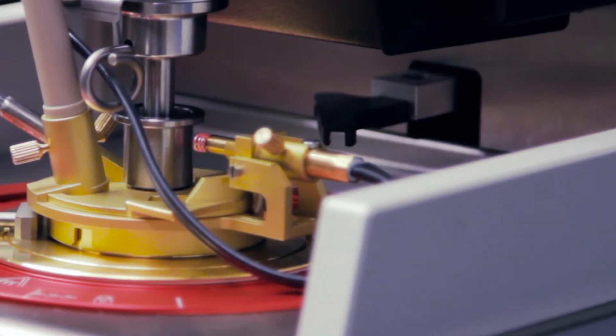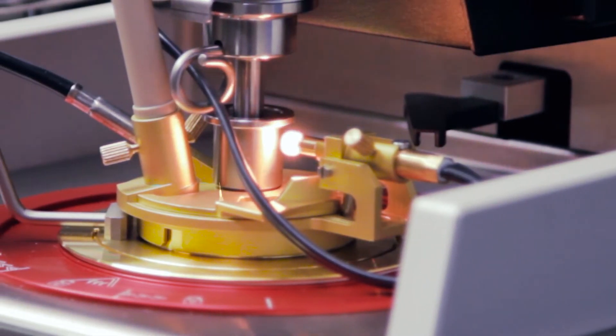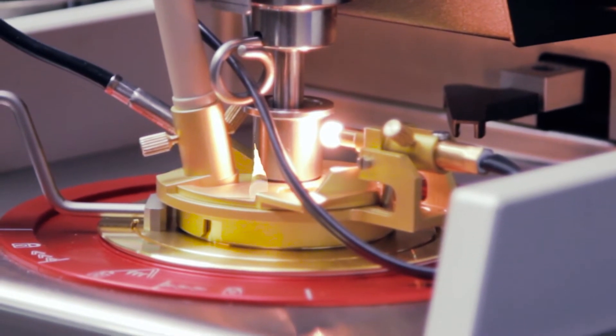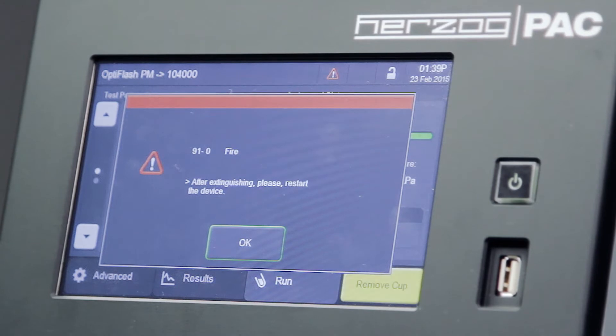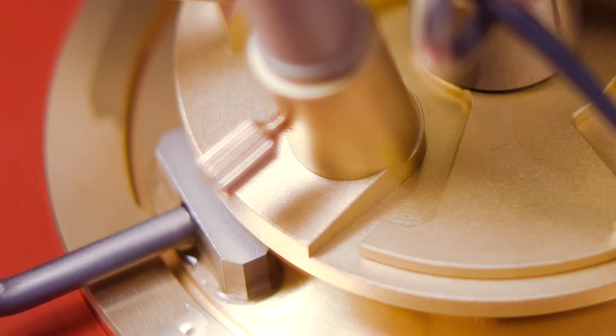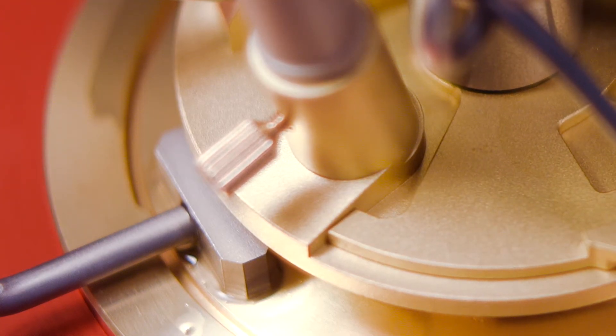When running a flashpoint test, it is possible for a flash to occur outside the test cup. When this happens, OptiFlash's safety monitoring system aborts the test and closes the shutter to eliminate the flame without activating the fire suppression system.